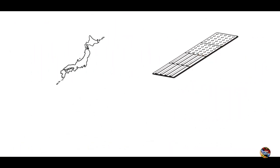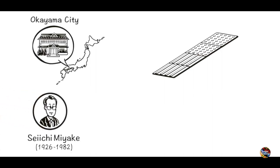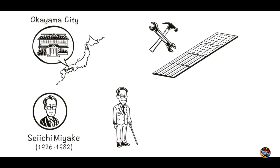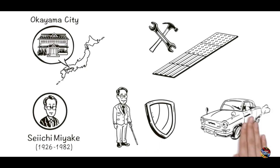It all started in Japan. Seichi Miyake, a hotel owner in Okayama City, had a close friend who was visually impaired. He developed these tiles to keep his friend safe on the streets.